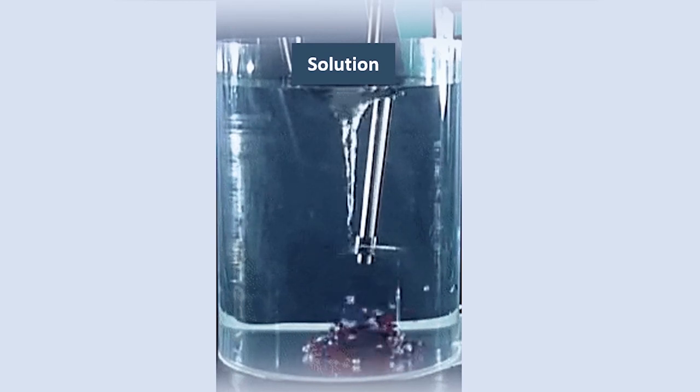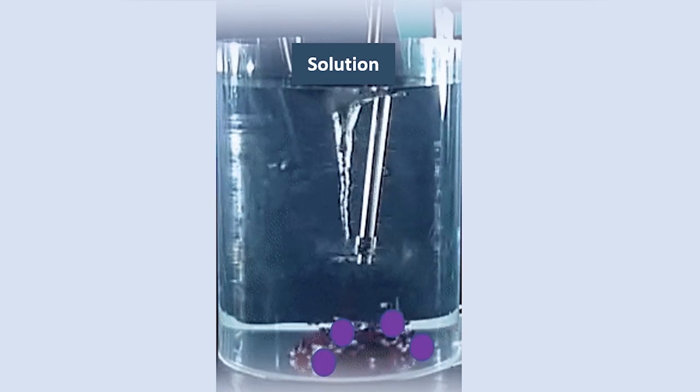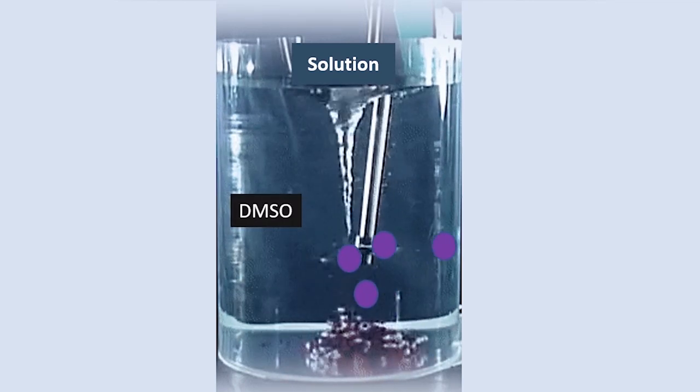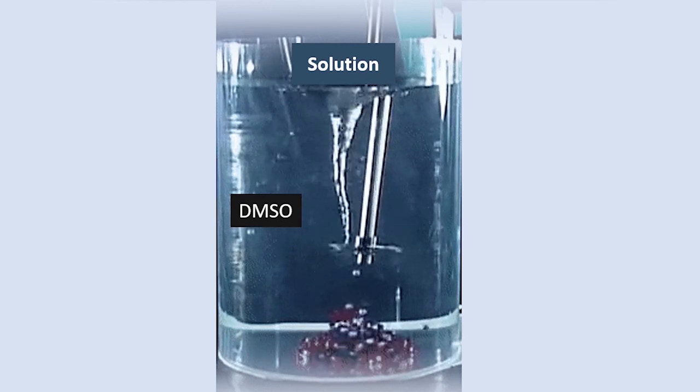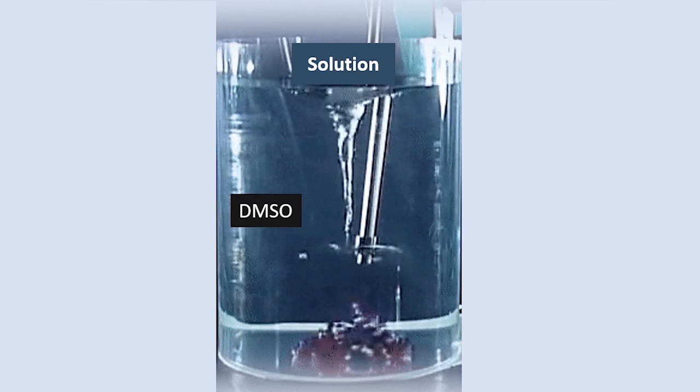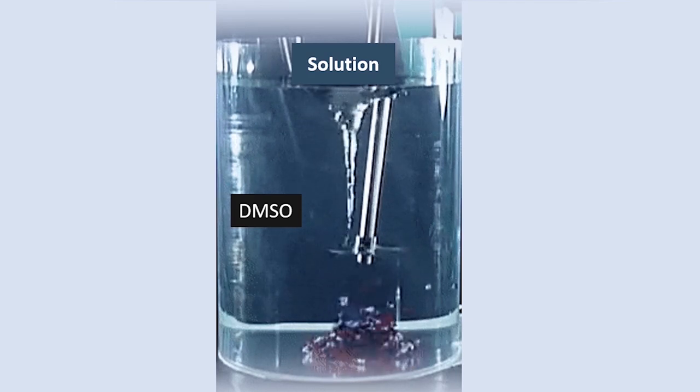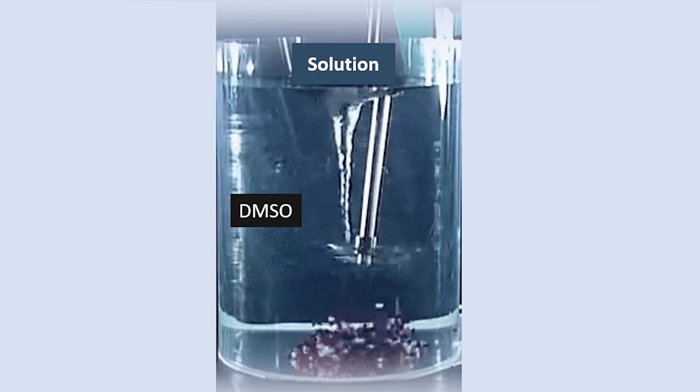The remaining two—the PET and ethylene vinyl alcohol—they dissolved in a solvent called dimethyl sulfoxide (DMSO), which dissolved the ethylene vinyl alcohol. The remaining PET film was then recovered.